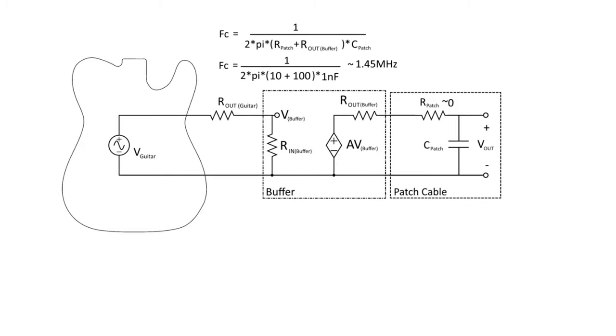Looking at the second half of this circuit, looking at the output of the buffer into the patch cable, we can also calculate a frequency cutoff when the buffer is in place. In this case, the cutoff frequency is going to be about 1.45 MHz, which is well above anything that is going to affect your guitar signal. It's essentially a passband. So by implementing that buffer, we're not going to attenuate any of those treble frequencies. And we're going to maintain that fidelity of the signal.